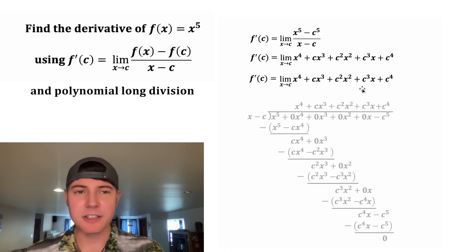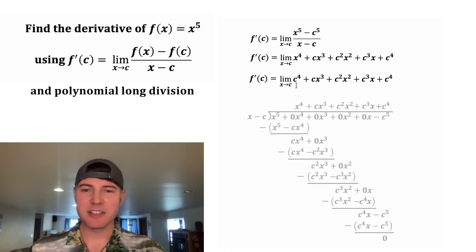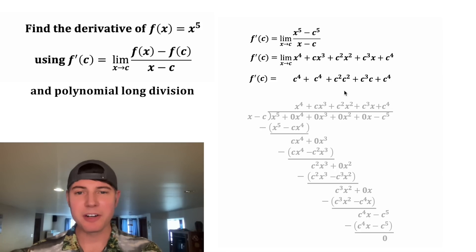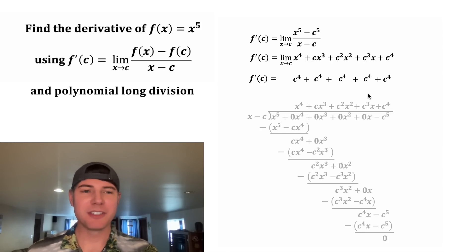We're going to have all of our x's approach c. So now let's do a direct substitution again. Let's plug in c for this x and c for all the other x's. And now that we've done the direct substitution, we can get rid of this limit notation. Now we can clean all these up. c times c³ is equal to c^4. c² times c² is equal to c^4. And c³ times c is equal to c^4.